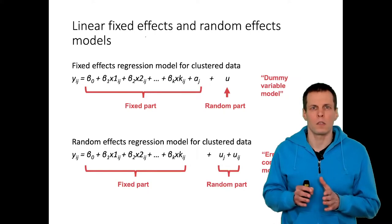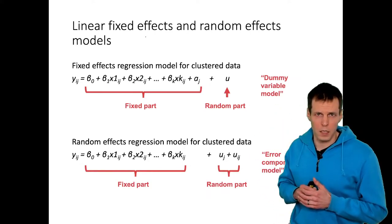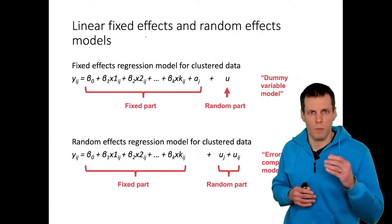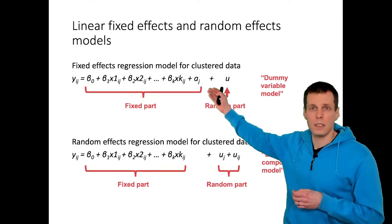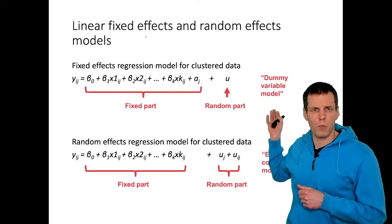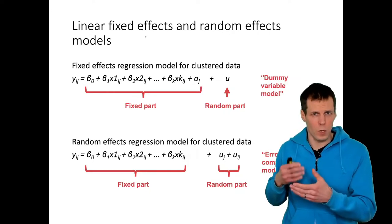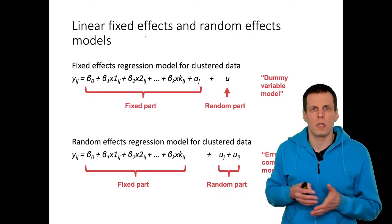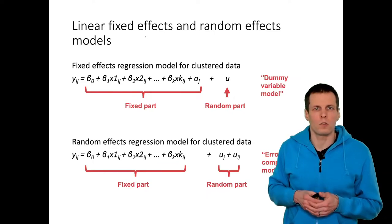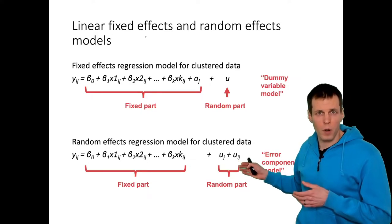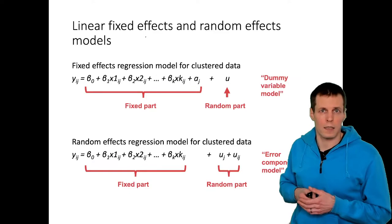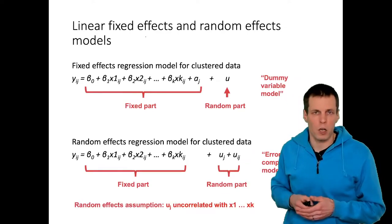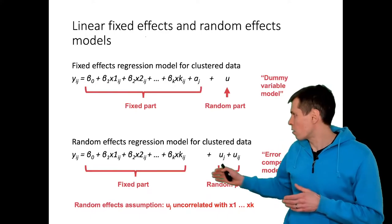When we talk about linear models, we have two commonly used panel data analysis techniques to deal with unobserved heterogeneity. The fixed effects model models consistent differences between groups or clusters using a fixed effect estimated separately for each cluster — known as the dummy variable model. Another technique is random effects estimation, also called the error components model, where unobserved heterogeneity is modeled in the random part as part of the error term. Importantly, this makes the assumption that all unobserved differences are uncorrelated with the observed predictor variables.